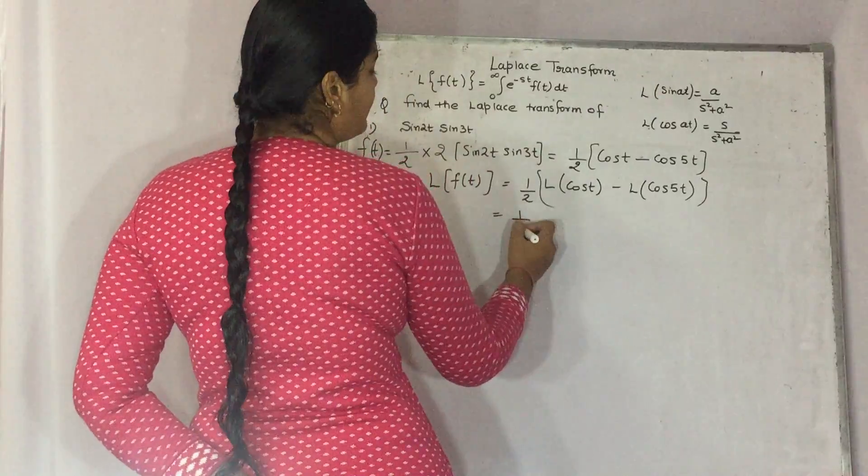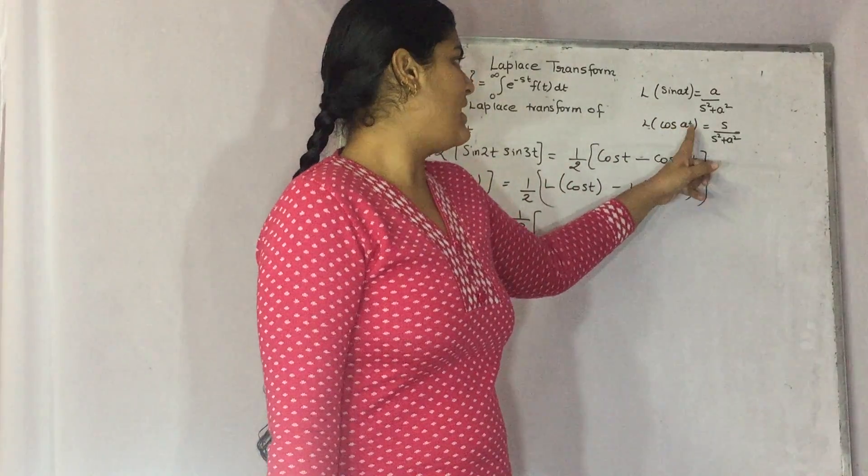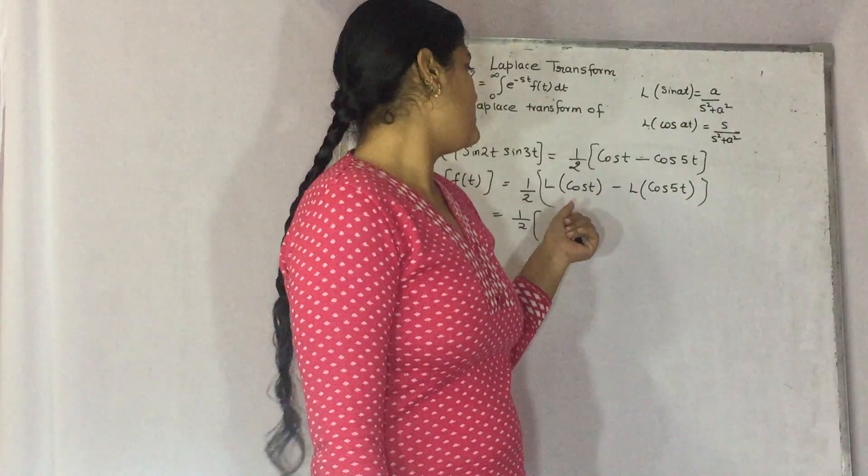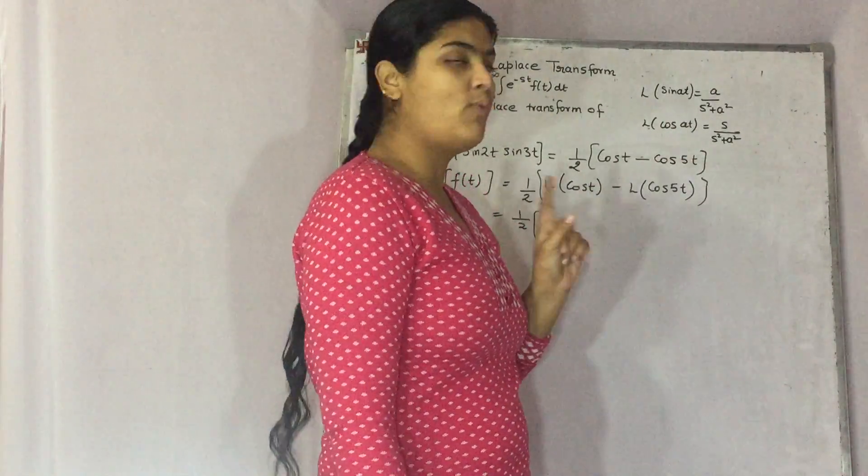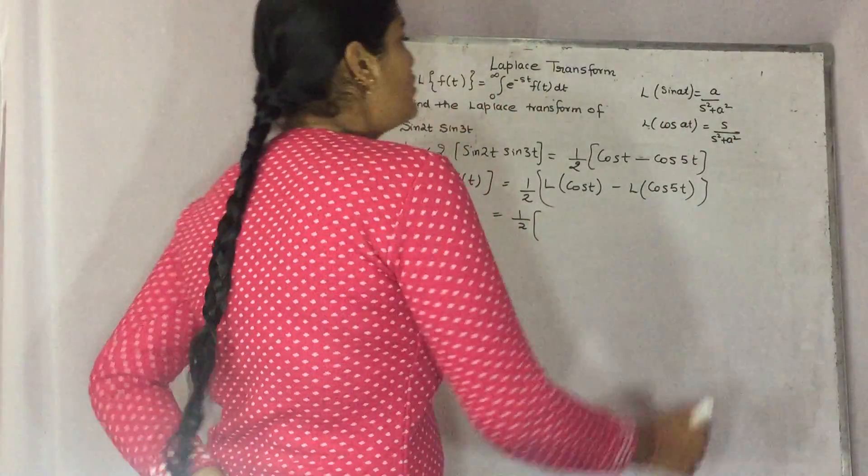Listen, compare this with the formula cos at. If you compare it, then what do you see? a is your 1, whereas in this formula your a is 5.